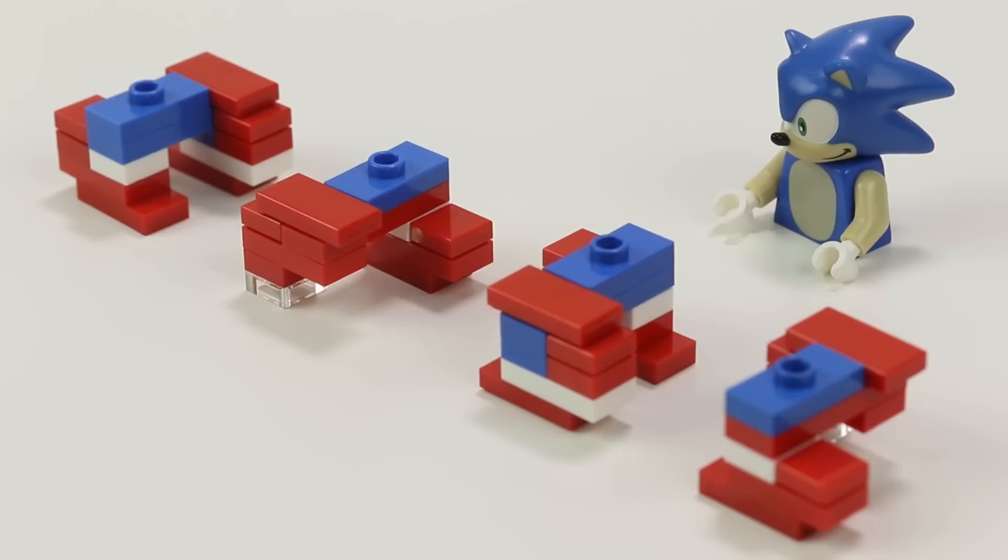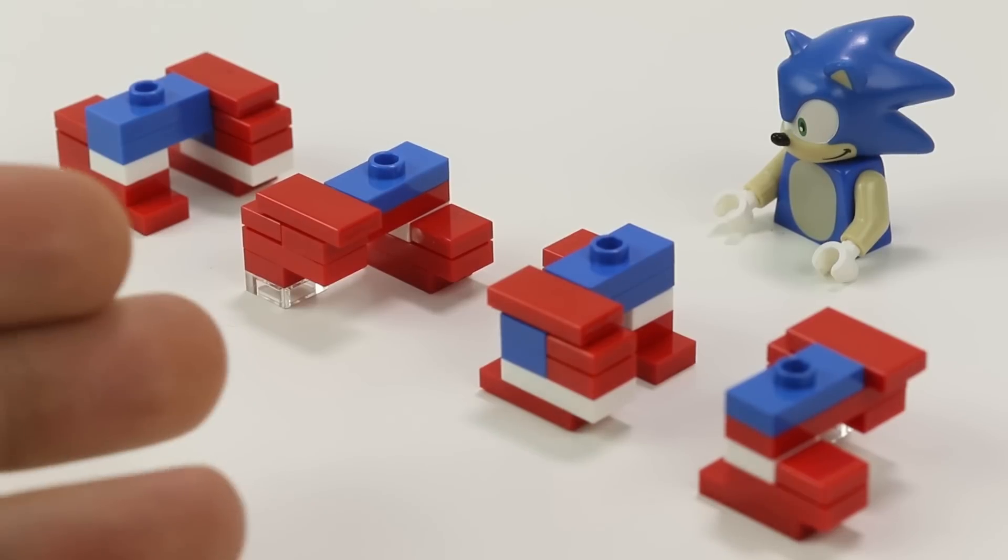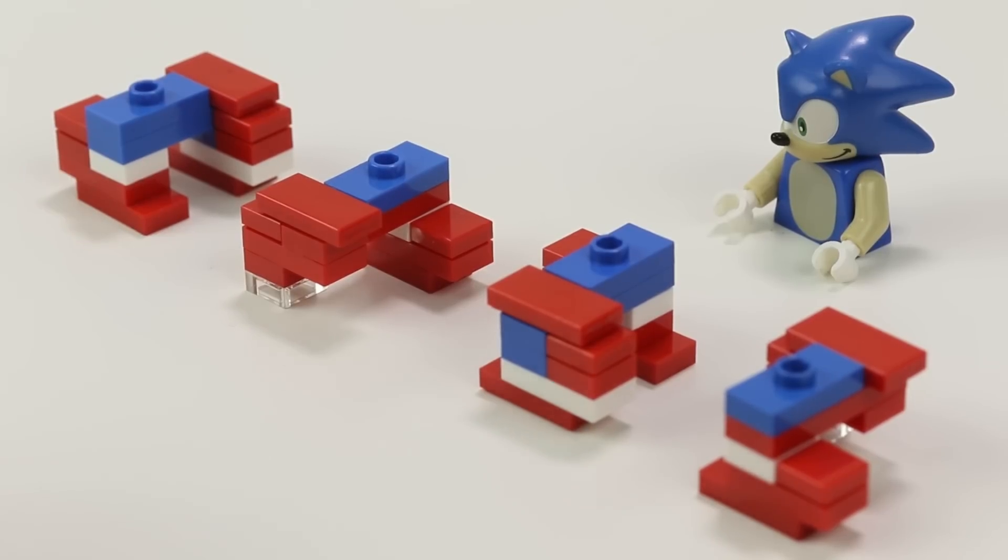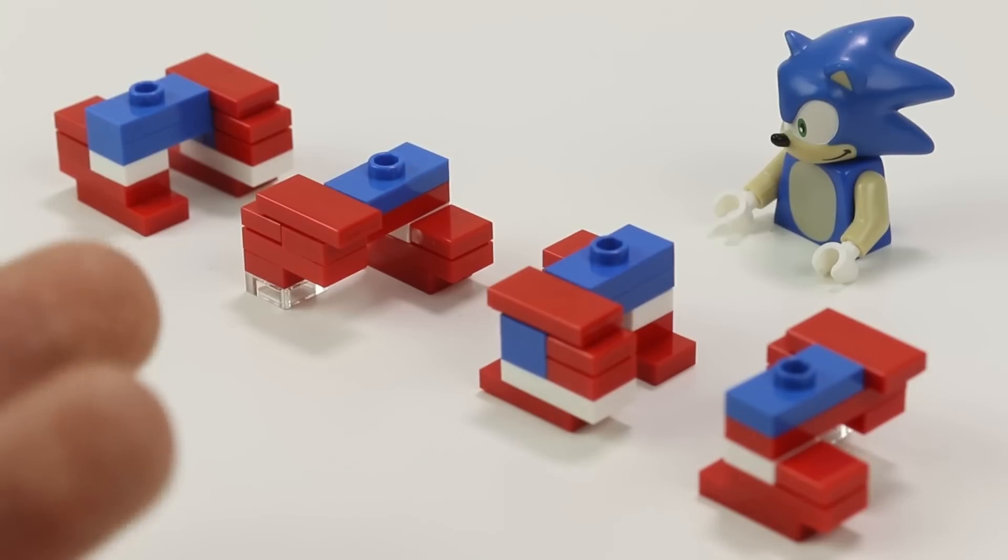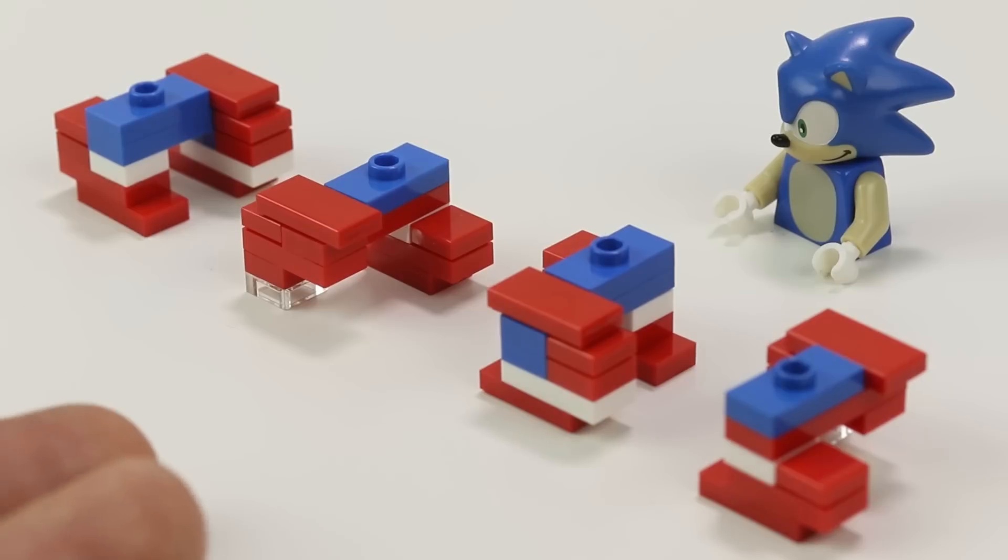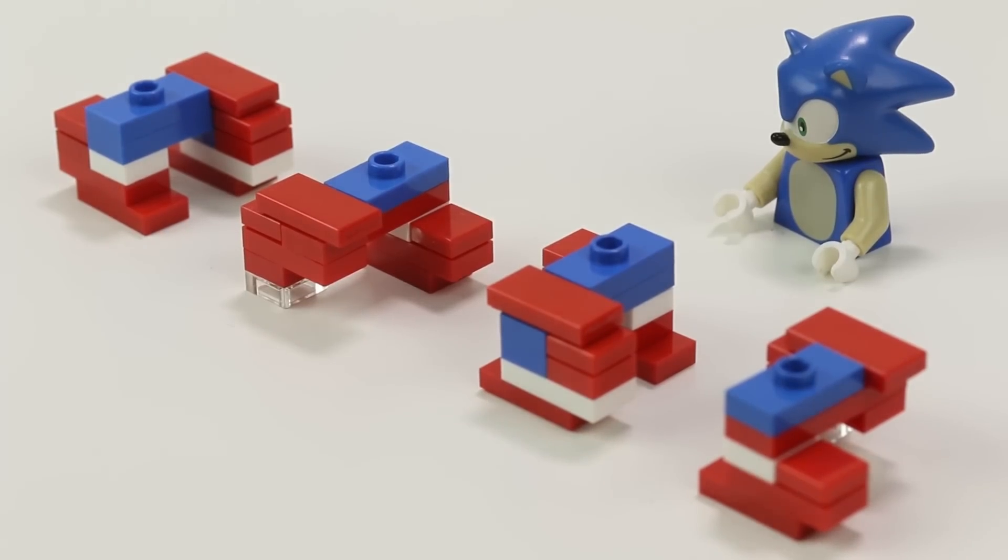Since so many people asked for it, here I am doing a tutorial of our brick-built leg shapes from the Sonic meets Michael Knight animation we did. Now these legs didn't actually show up in that video, but we did a behind-the-scenes where we showed a test animation that used these leg shapes. So many people were like, can you show me how to make those? That I decided to show you how to make them.